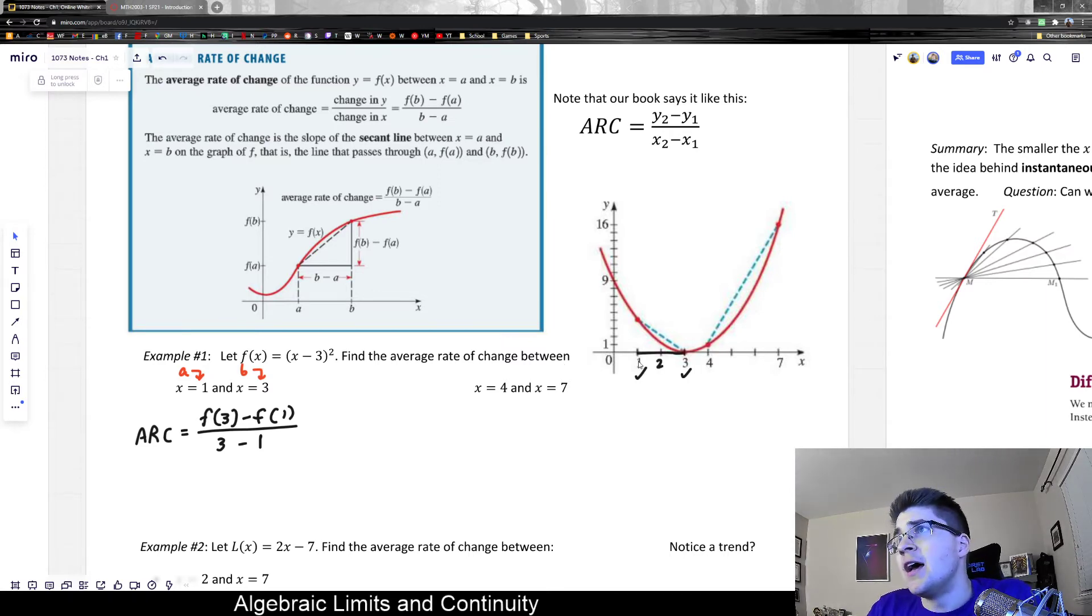And then we also have delta y, which is the height, rise over run, is another way you've probably learned to find the slope, which would be the difference in the y value. This would be y2, which would just be f(3). Remember that how a function always works is you plug in 3 to get the point.